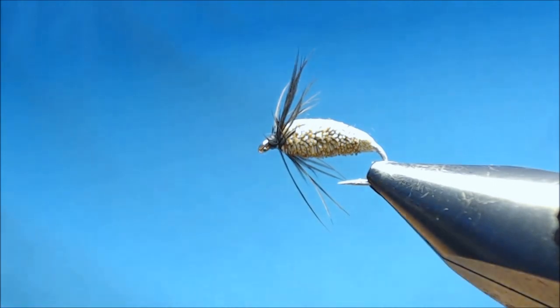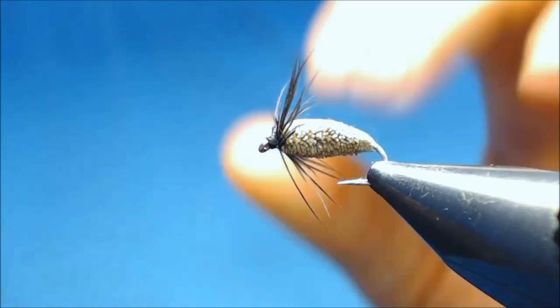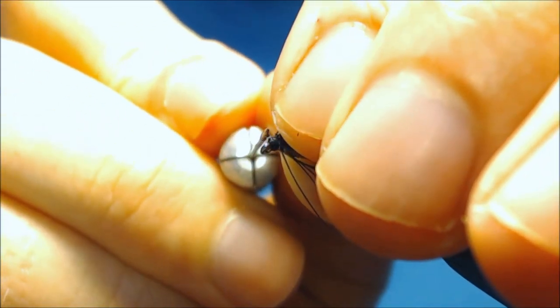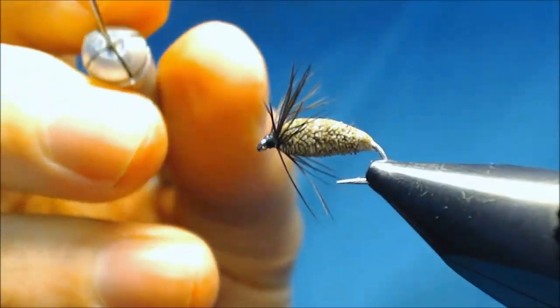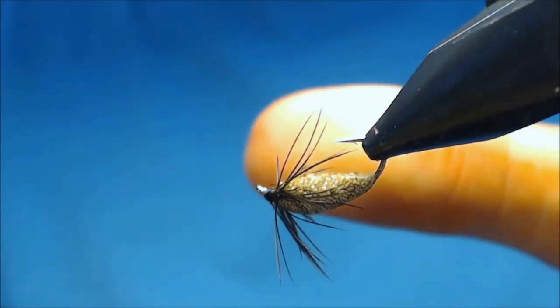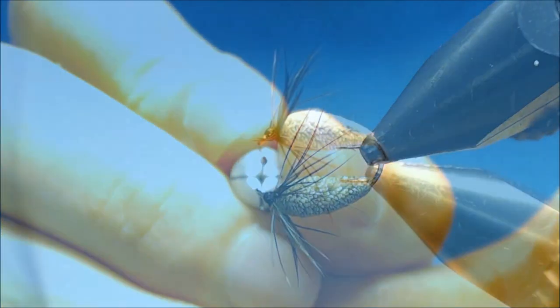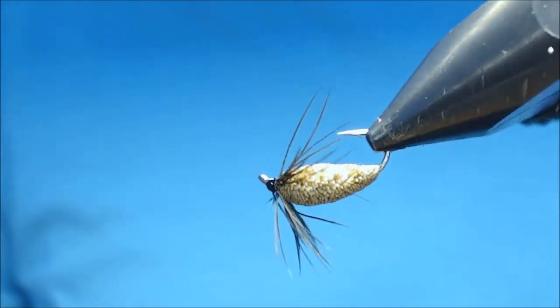And then I like to varnish the head with some varnish. It does not need it but I like to do it. It makes for a more durable fly and there's a deer hair pupa.